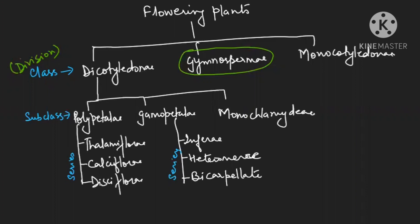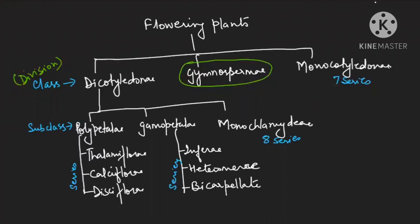Monochlamydae has eight series, and Monocot has seven series. These series are now known as classes according to the taxonomical hierarchy. Each series has orders according to Bentham and Hooker's language, but order is now known as family. The biggest drawback of this system is keeping gymnosperms between the two members of angiosperms. However, we still practice the Bentham and Hooker system to maintain botanical gardens and herbarium sheets.